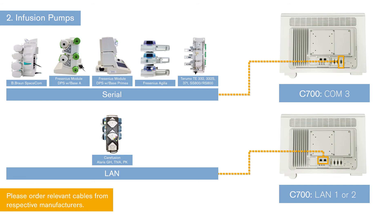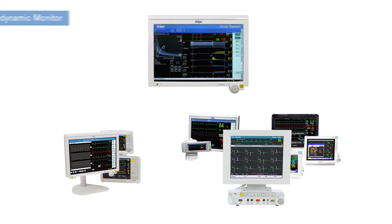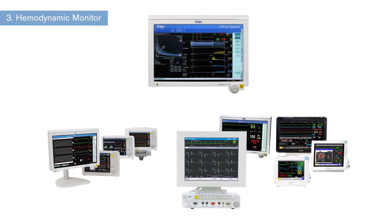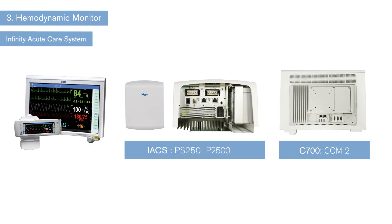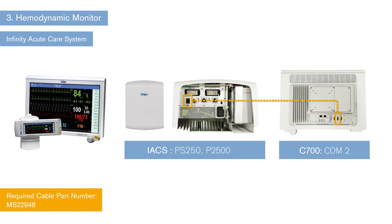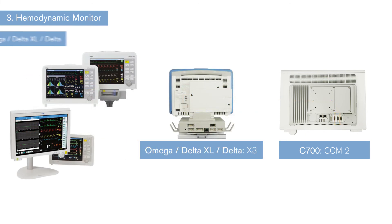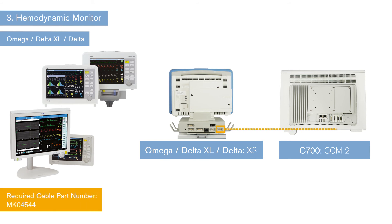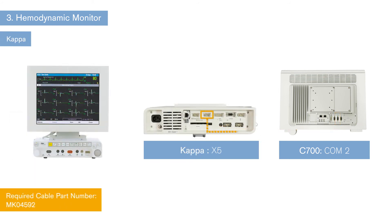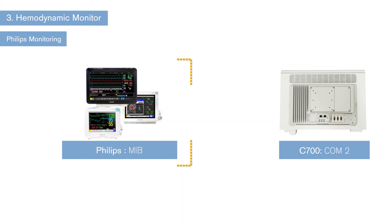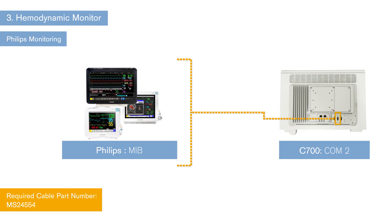Please order relevant connectivity cables from respective manufacturers. Serial connection of the monitor is used for connection to SmartPilotView COM2 port. In case of an Infinity Acute Care System, the serial port comes out from the power supply PS250/P2500. In case of Amiga, Delta XL, or Delta, use the IDS X3 port. In case of Kappa, use the X5 port. Use MIB ports of Philips monitors to connect to SmartPilotView COM2 port.